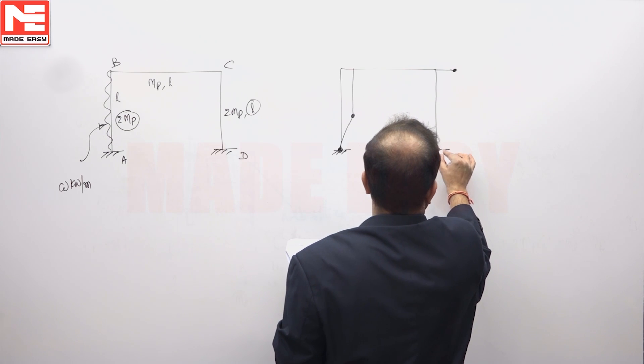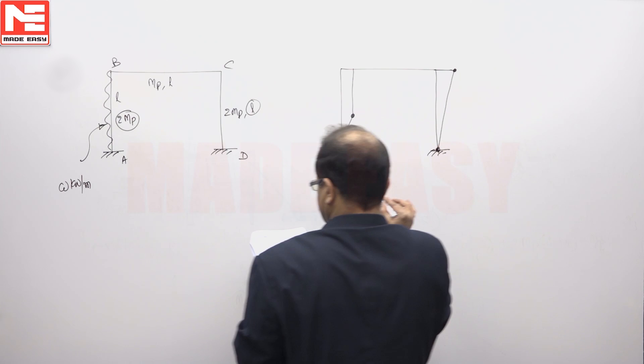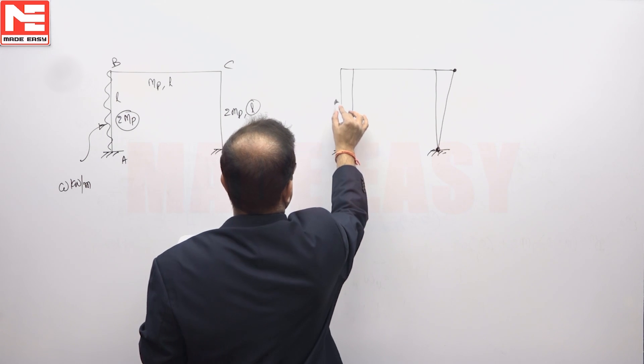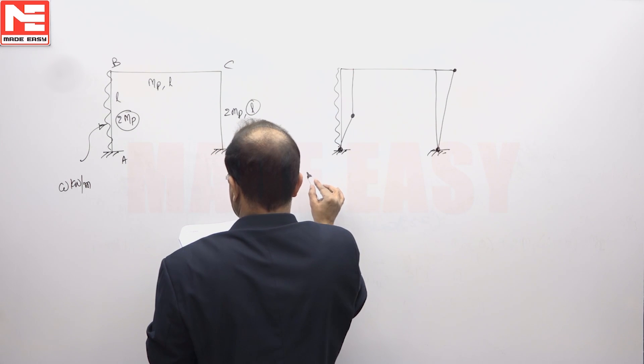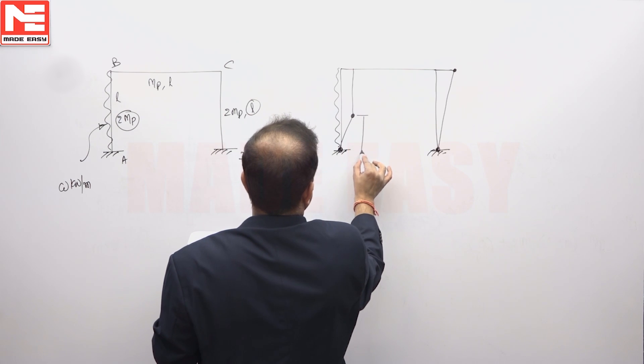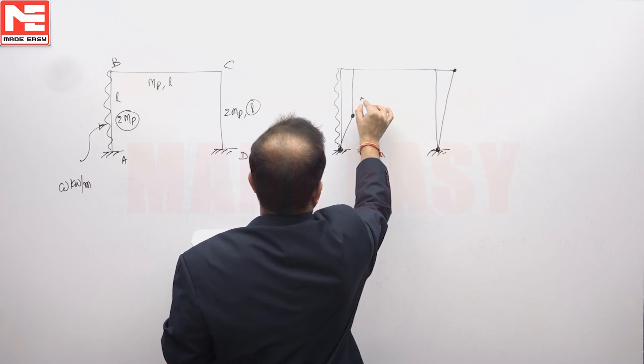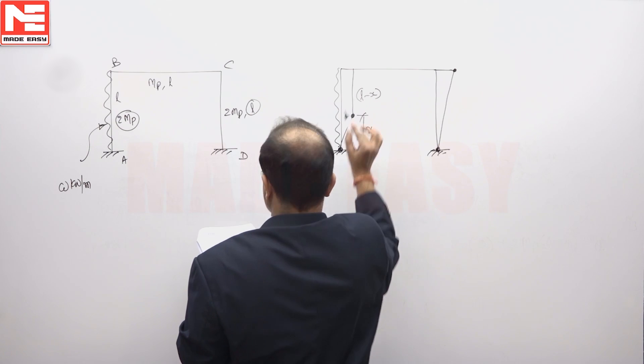Hinge will develop here and here. This is a combined mechanism case. This distance you can take it as X. This is L minus X.